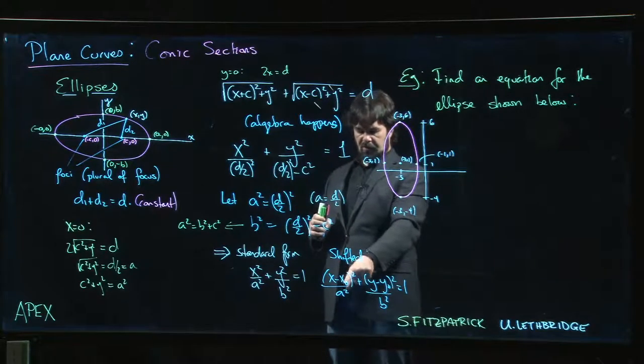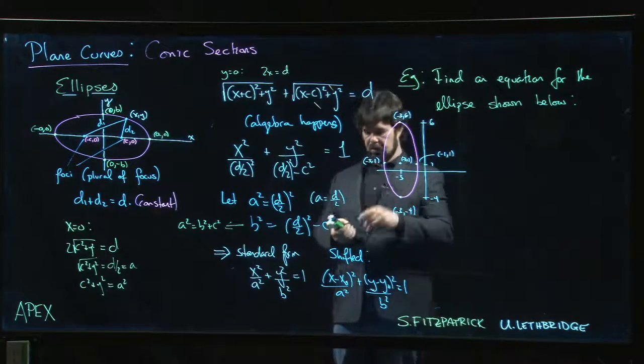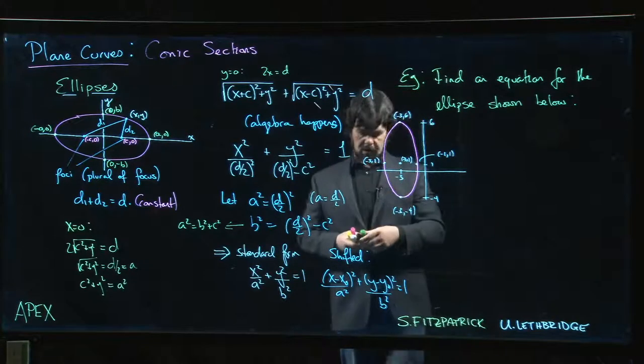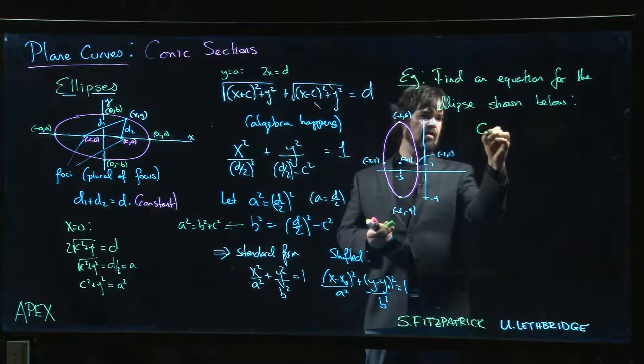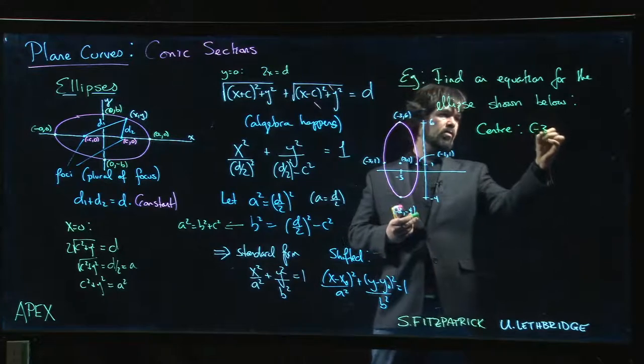So the coordinates x naught, y naught, those are going to be the center of the ellipse. So we can see right away the center here has to be at minus 3, 1. So the center is minus 3, 1.